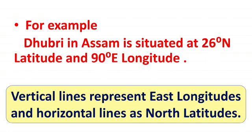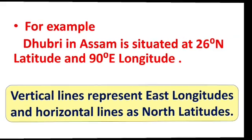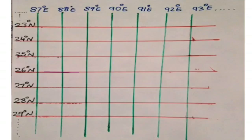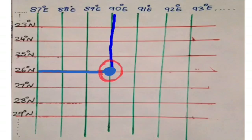Let's take an example. Dubri in Assam is situated at 26 degrees North latitude and 90 degrees East longitude. The green lines are the vertical lines of longitude and the red lines are horizontal parallels of latitude. We draw a line at 90 degrees East and a line at 26 degrees North — where they intersect is the location of Dubri. So Dubri is located at 26 degrees North latitude and 90 degrees East longitude.